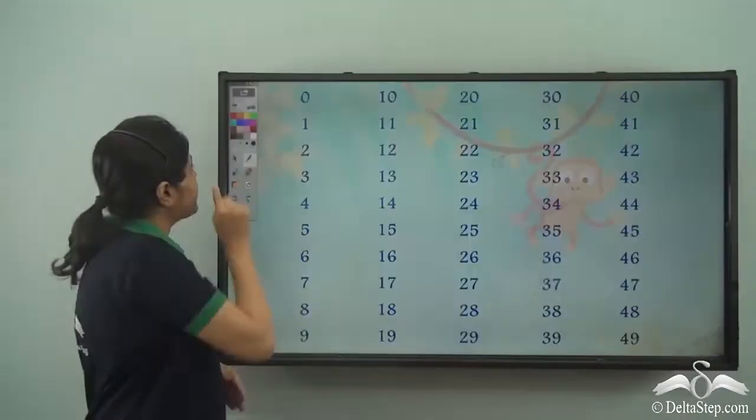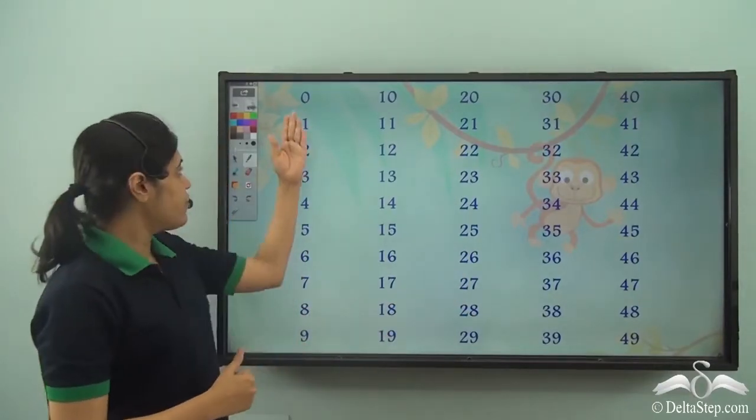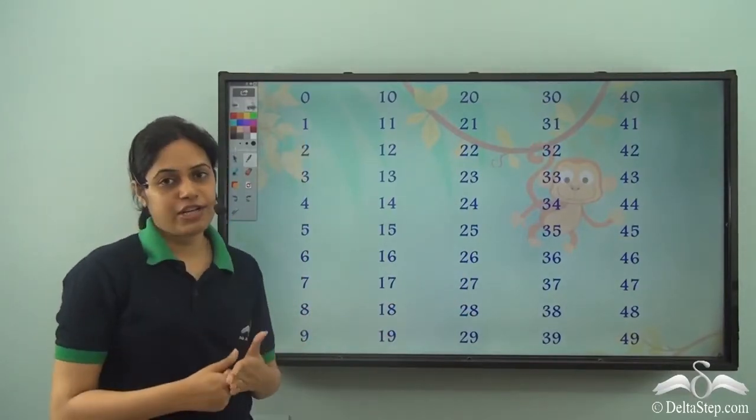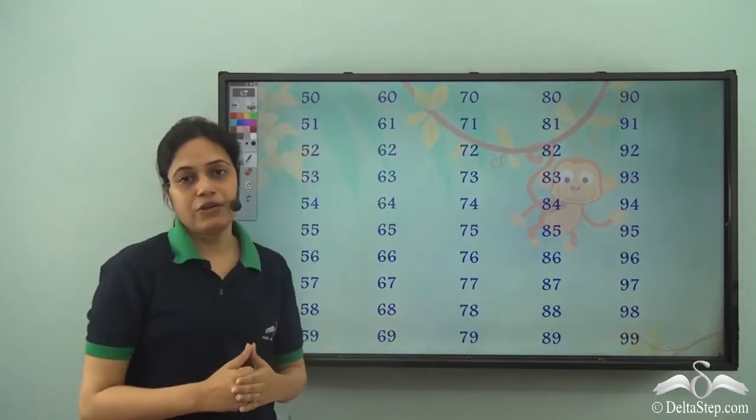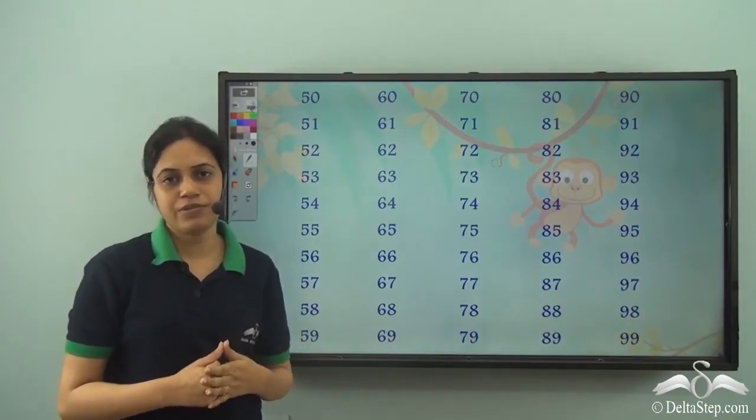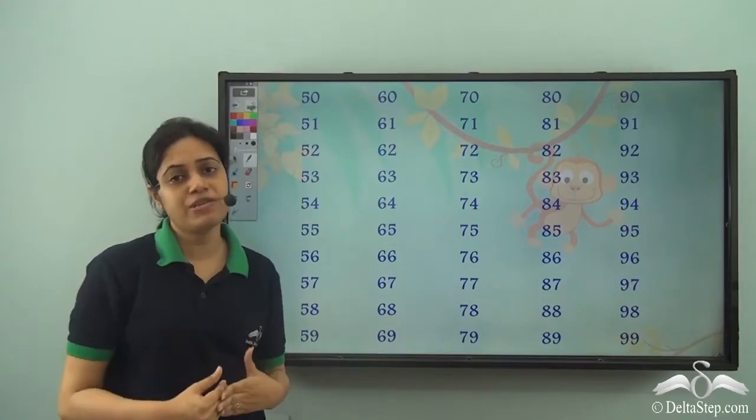Let us see. So these are all the numbers which Rohit had learned. From 0 to 9 the one-digit numbers and then from 10 to 99 all the two-digit numbers. But what are these three-digit numbers? What are these new numbers coming up?